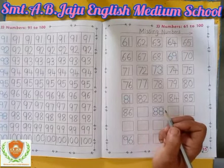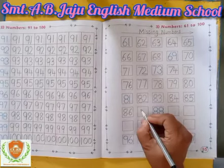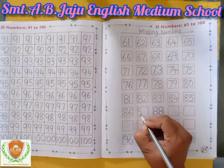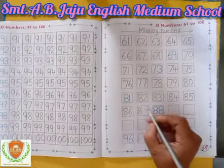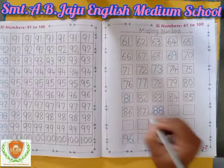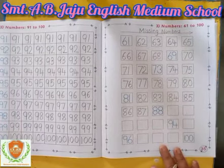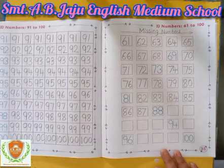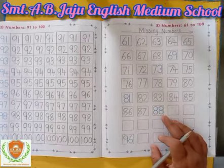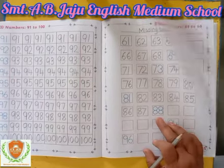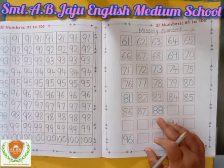After 86, which number will become? 87. First write down 8, then write down 7. 87. After 87, which number will become? Already here — 88.